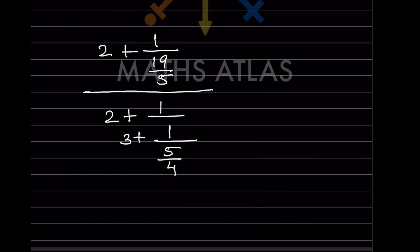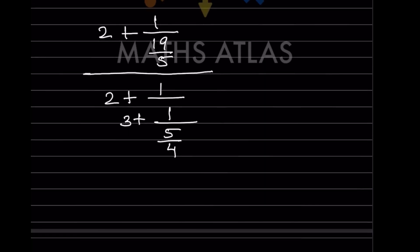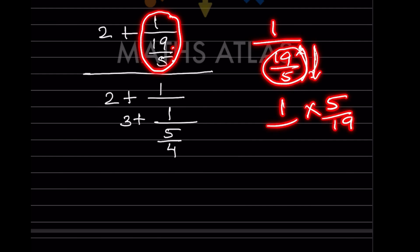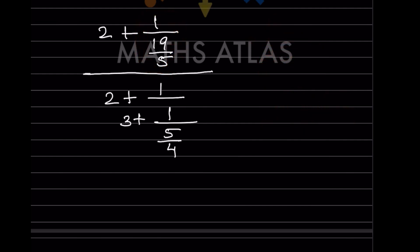Now let us work on the numerator. We have 1 divided by (19/5). Since 1 is in the numerator and 19/5 is in the denominator, we flip 19/5 to get 1 × 5/19, which equals 5/19. So the numerator becomes 2 + 5/19.